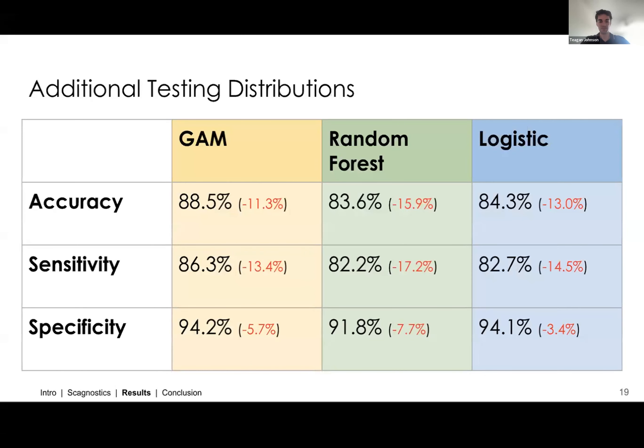So as you might guess, we saw pretty significant dips in accuracy, sensitivity, and specificity. So double digit drops in accuracy across all three models, and then pretty substantial drops in those other two metrics as well.